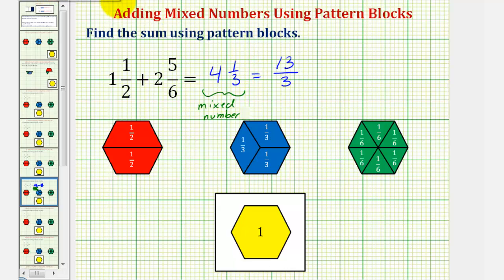And thirteen-thirds is called an improper fraction, because the numerator is greater than or equal to the denominator. But both answers are correct. I hope you found this helpful.